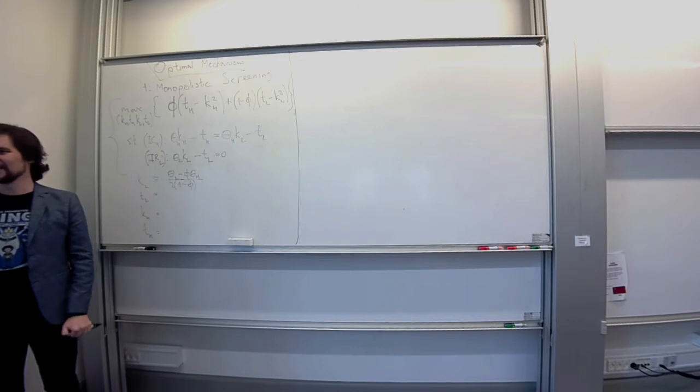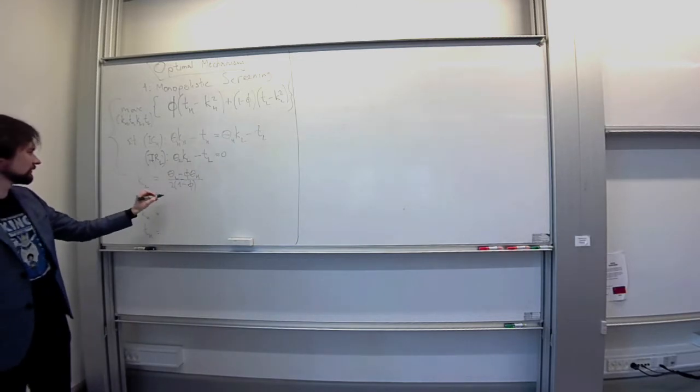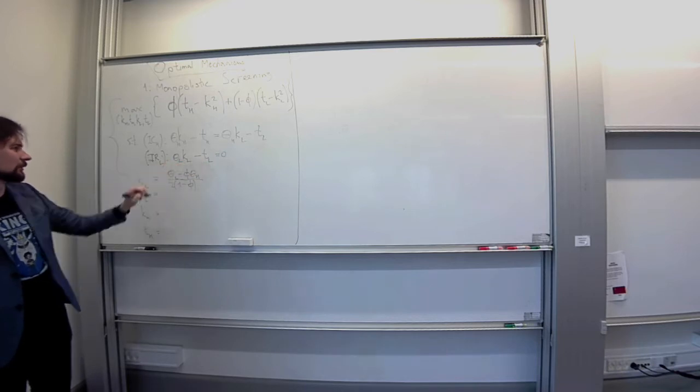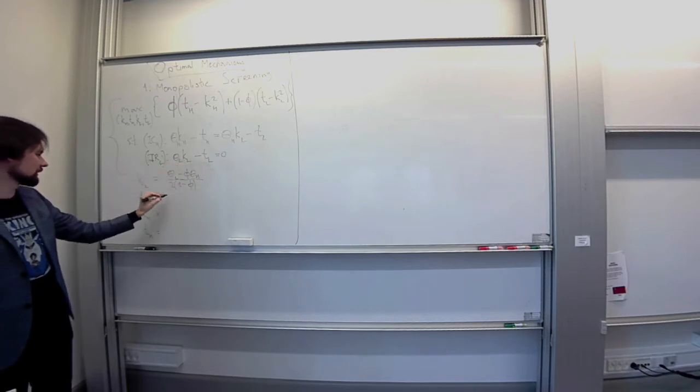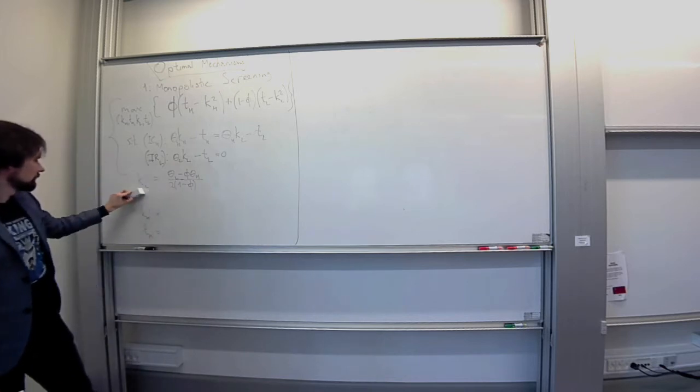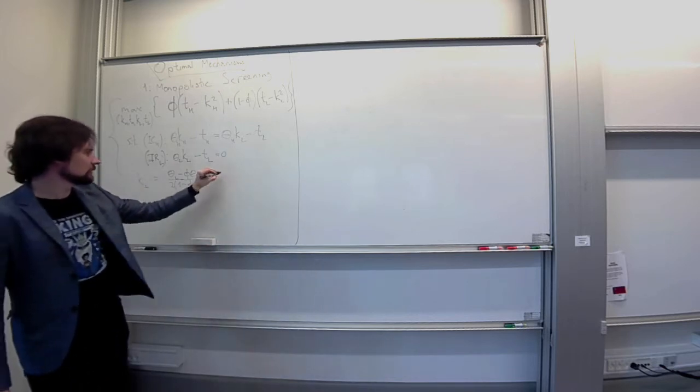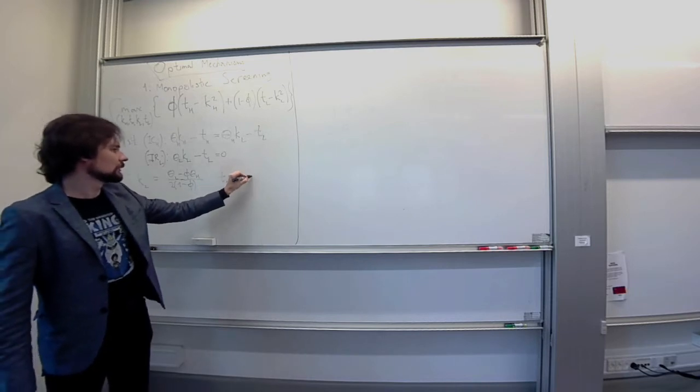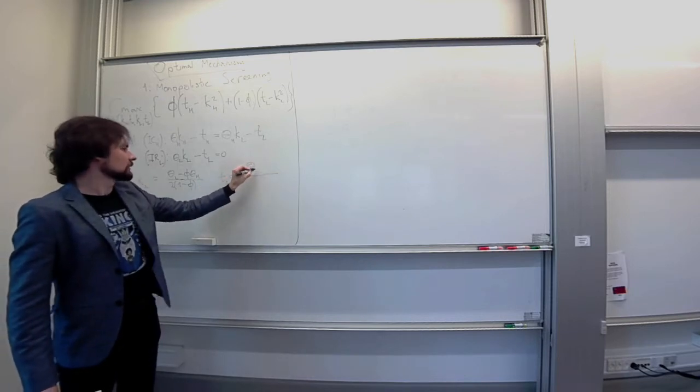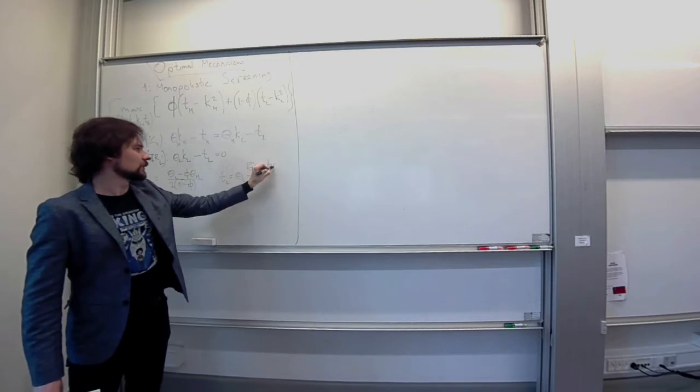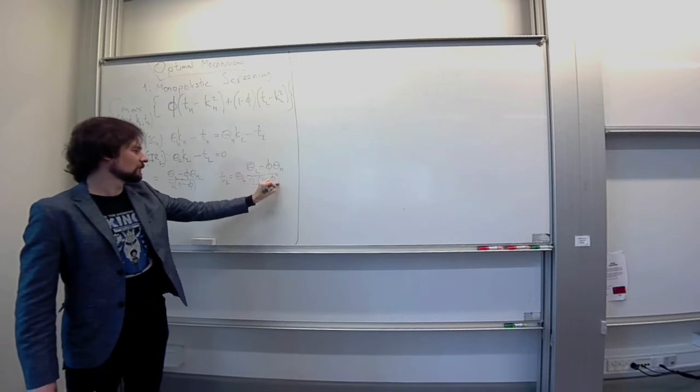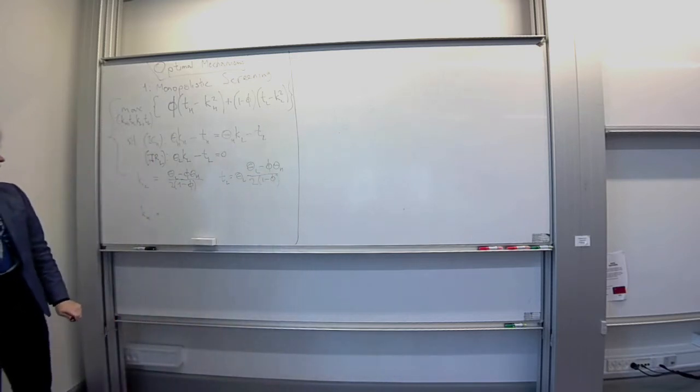TL. Somebody else. That's right. I guess this is easy to see from IRL. TL equals theta L times KL. So TL will be equal to theta L times theta L minus phi times theta H over 2 times 1 minus phi. Good.